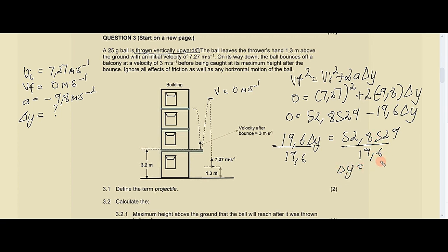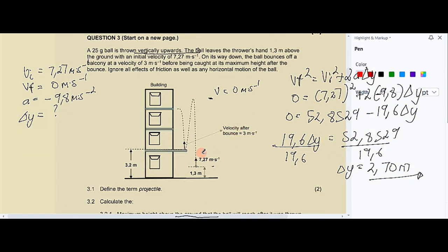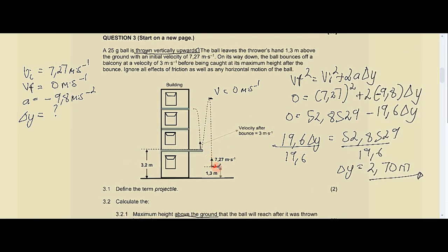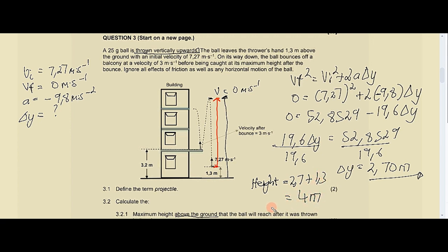Dividing both sides by 19.6, delta y equals 2.70 meters (rounded to two decimal places). Note that 2.70 meters is the height from the thrower's hand to the maximum height, not above the ground. To find the height above the ground, we add the 2.70 meters to the 1.3 meters, giving a total height of 4 meters above the ground.